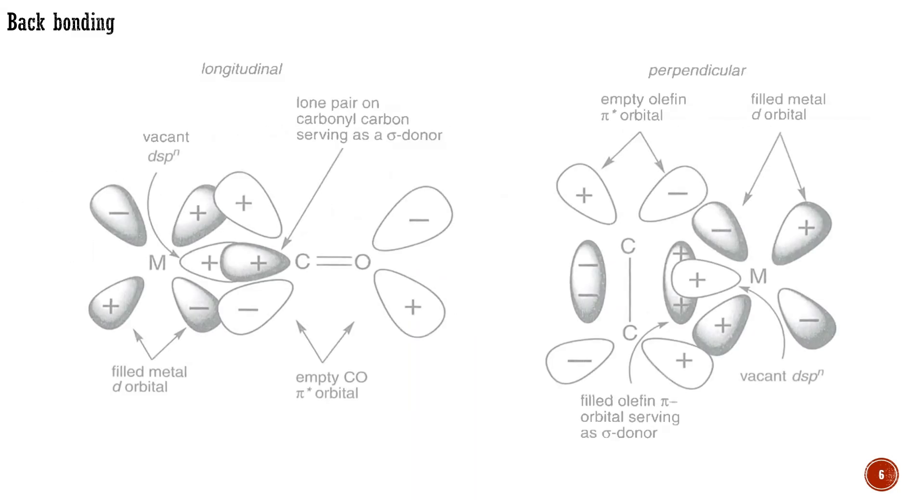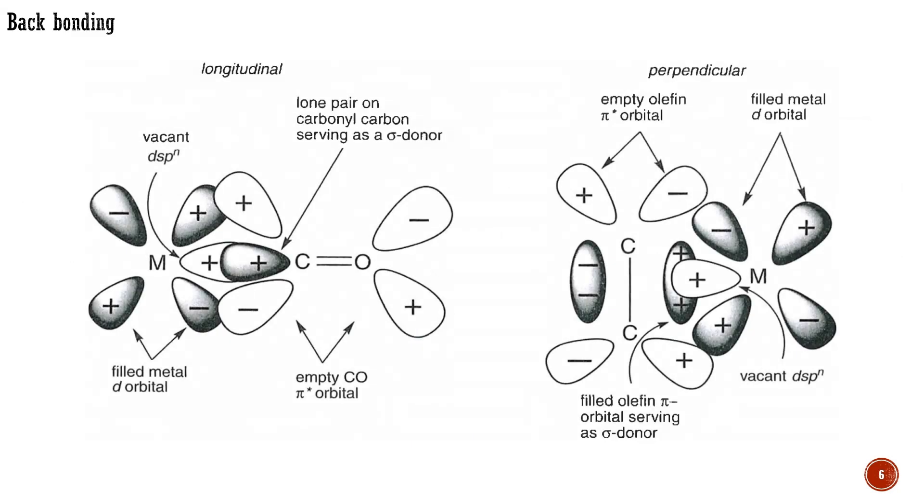There are two modes of π-back-bonding in two types of π-acceptor ligands: longitudinal acceptors, such as carbon monoxide, isonitriles, and linear nitrosyls, and perpendicular acceptors, such as alkenes, alkynes, and arenes.